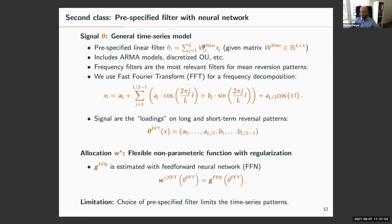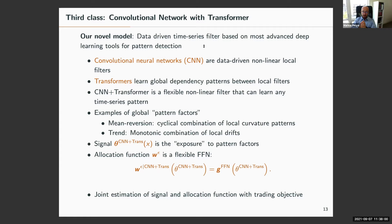Here comes our model: the convolutional transformer. It uses convolutional neural networks — data-driven non-linear local filters — combined with a transformer that learns global dependencies between these local filters. A CNN plus transformer is a flexible non-linear filter that can learn any time series pattern. For example, to learn a trend, the CNN detects local drifts and the transformer puts them monotonically together to get a global drift. For mean reversion, the CNN learns local curvatures and the transformer combines them cyclically to get global mean reversion.